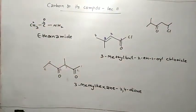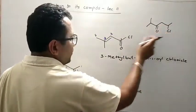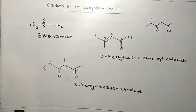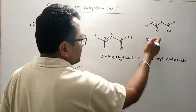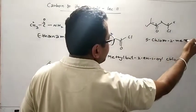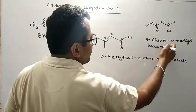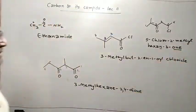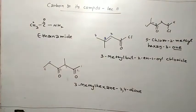This group is Cl. So Cl is not adjacent to this C=O. This is not acid chloride. So you will give the numbering from this side. So this is 5-chloro-2-methylhexan-3-one. When there is one, you will not write E. If there is dione, you will write E.